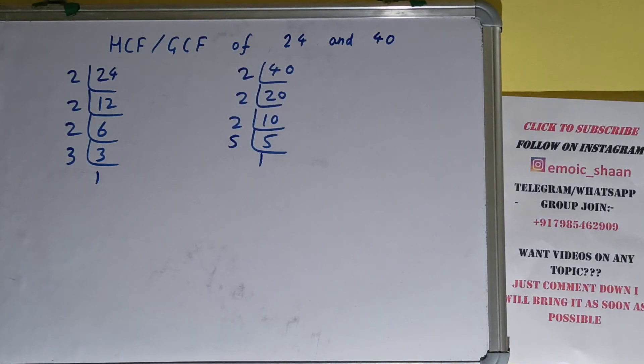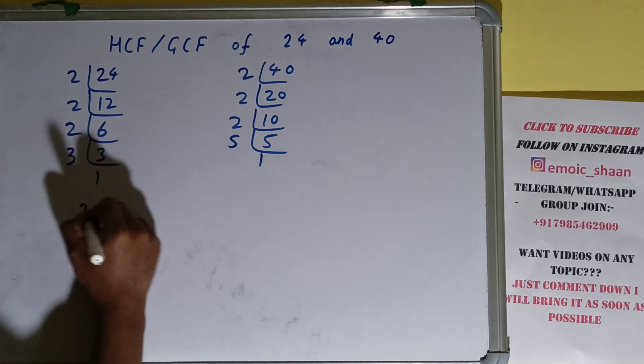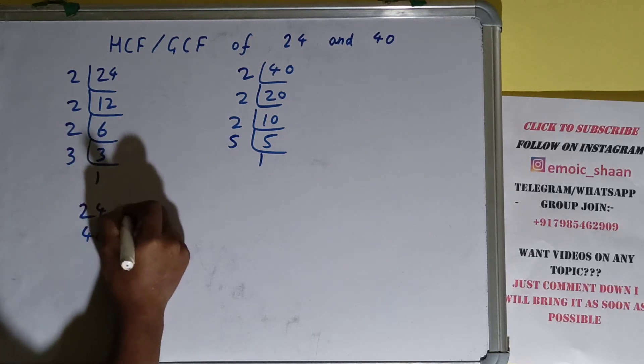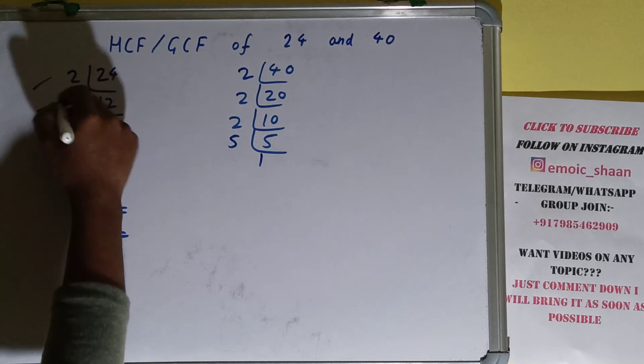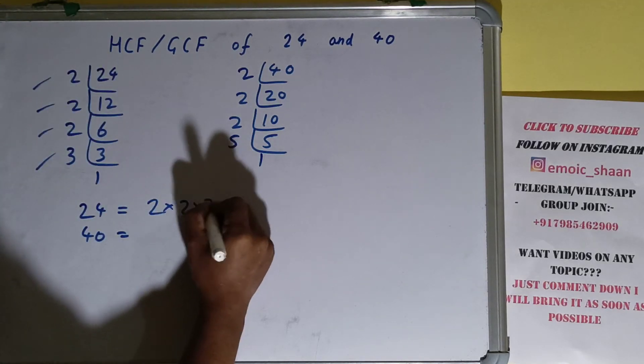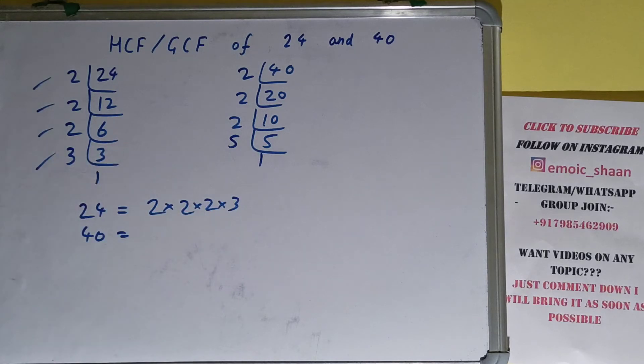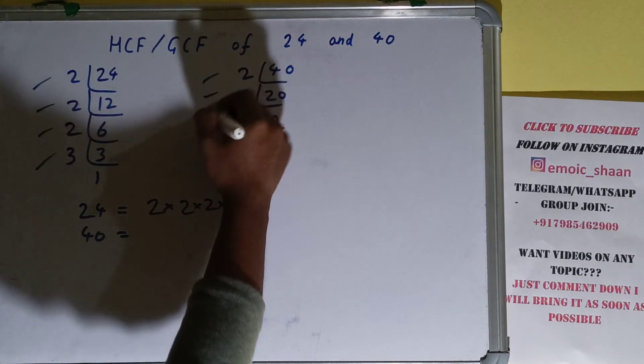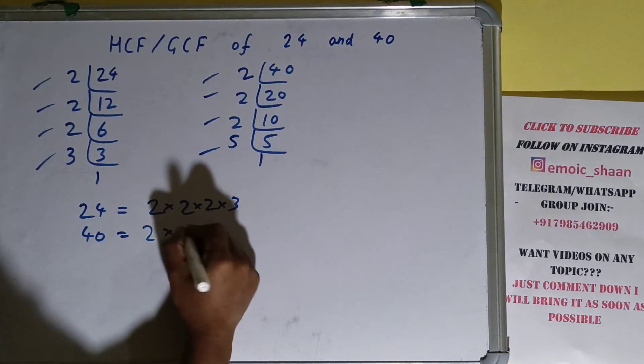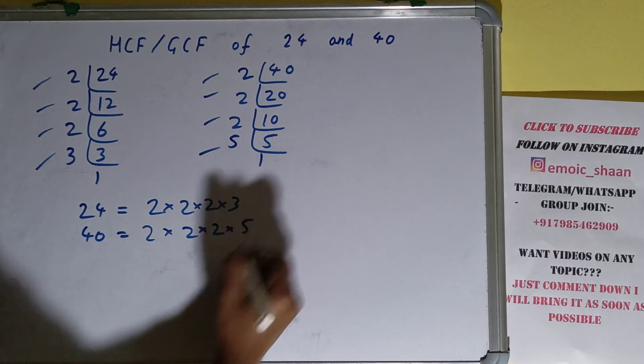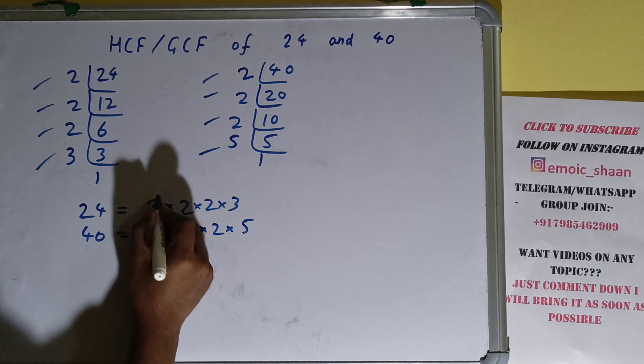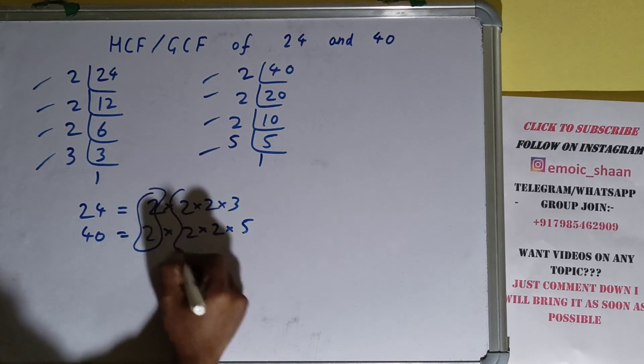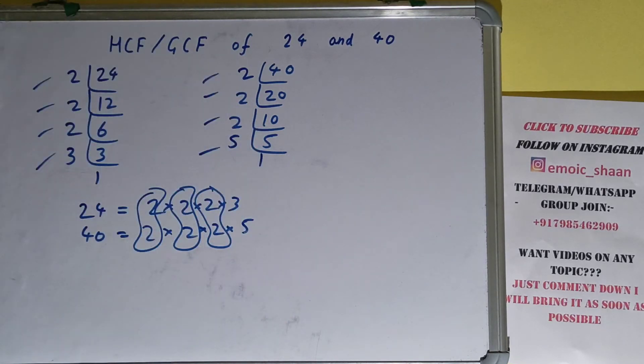We are done with the prime factorization step. The next thing we need to do is write down each of the numbers with their respective prime factors. For 24, the prime factors are 2, 2, 2, 3. For 40, the prime factors are 2, 2, 2, 5. The next thing you need to do is circle out the common prime factors. We have this 2 in common, this 2 in common, and this 2 in common. Do we have anything extra in common? No.